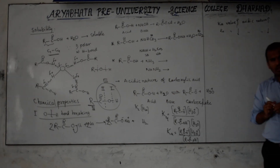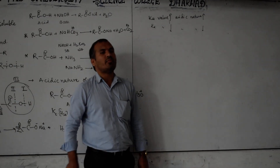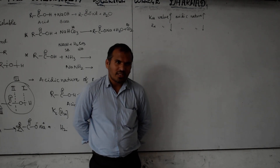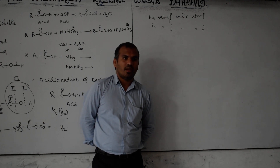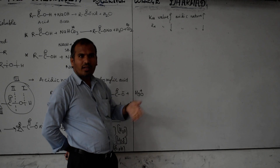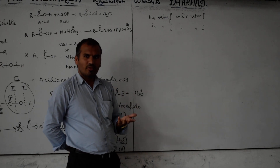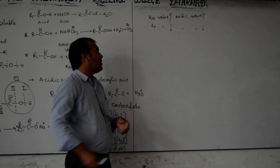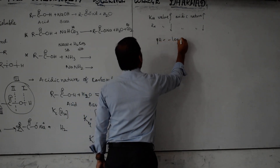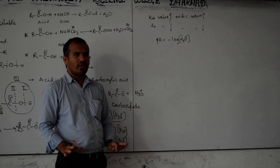Strong acids like HCl have Ka values around 10⁷, while some carboxylic acids have Ka values as low as 10⁻⁵⁰. Writing 50 zeros is impractical, so we use the logarithmic pKa scale: pKa = −log(Ka), similar to pH = −log[H⁺]. All organic acids are weaker compared to inorganic acids like H₂SO₄, HNO₃, HClO₄, HCl, and HBr, meaning their Ka values are lower.